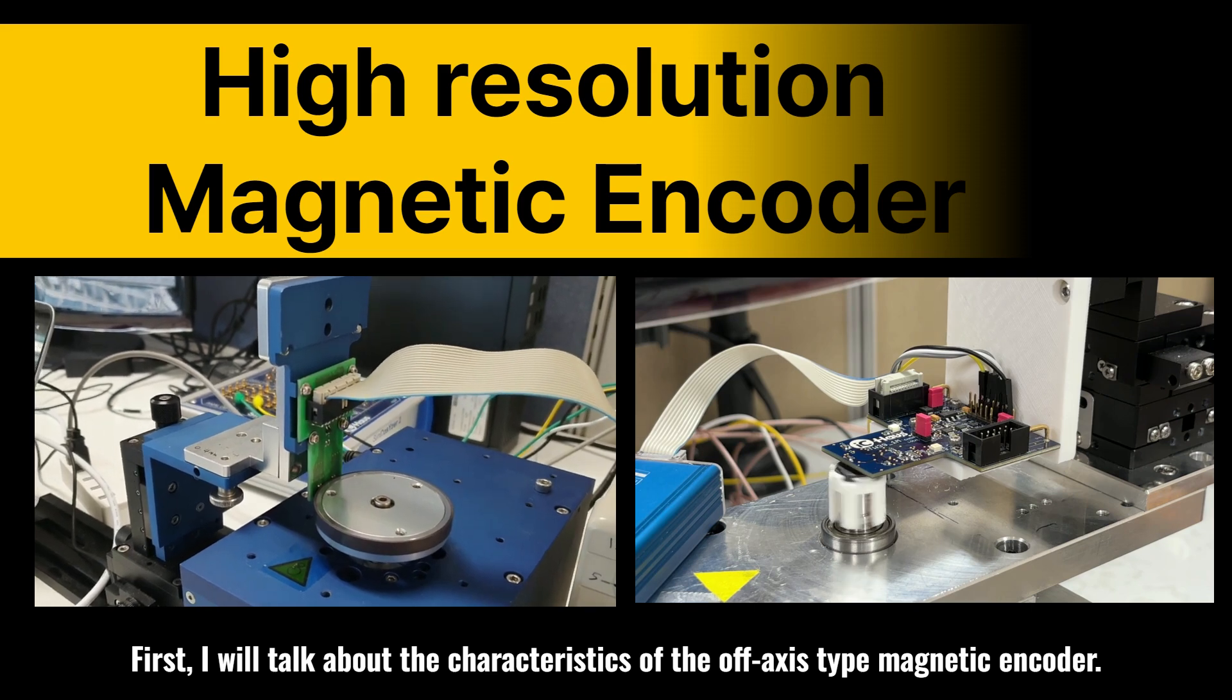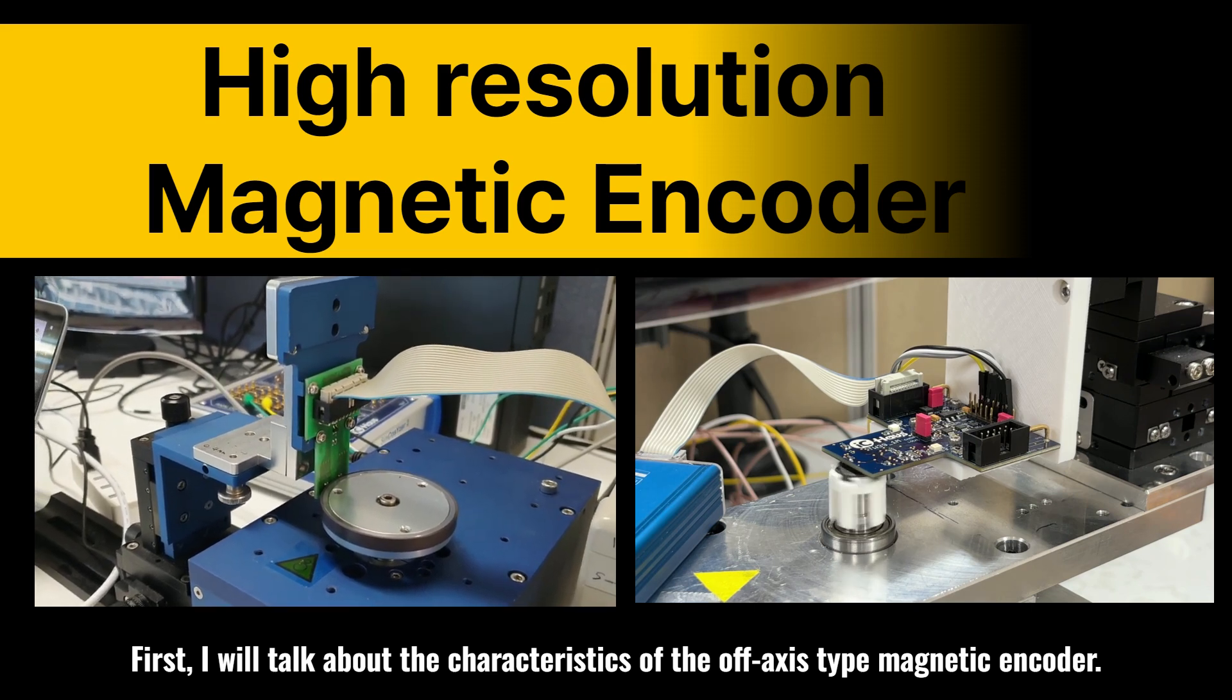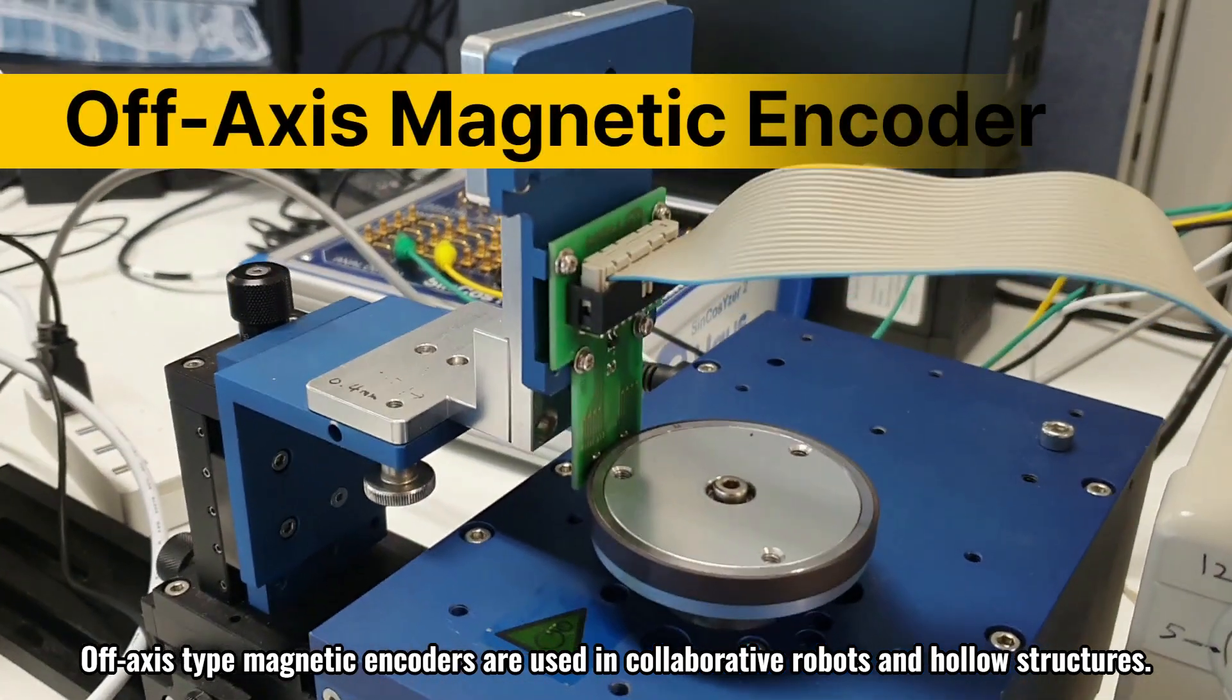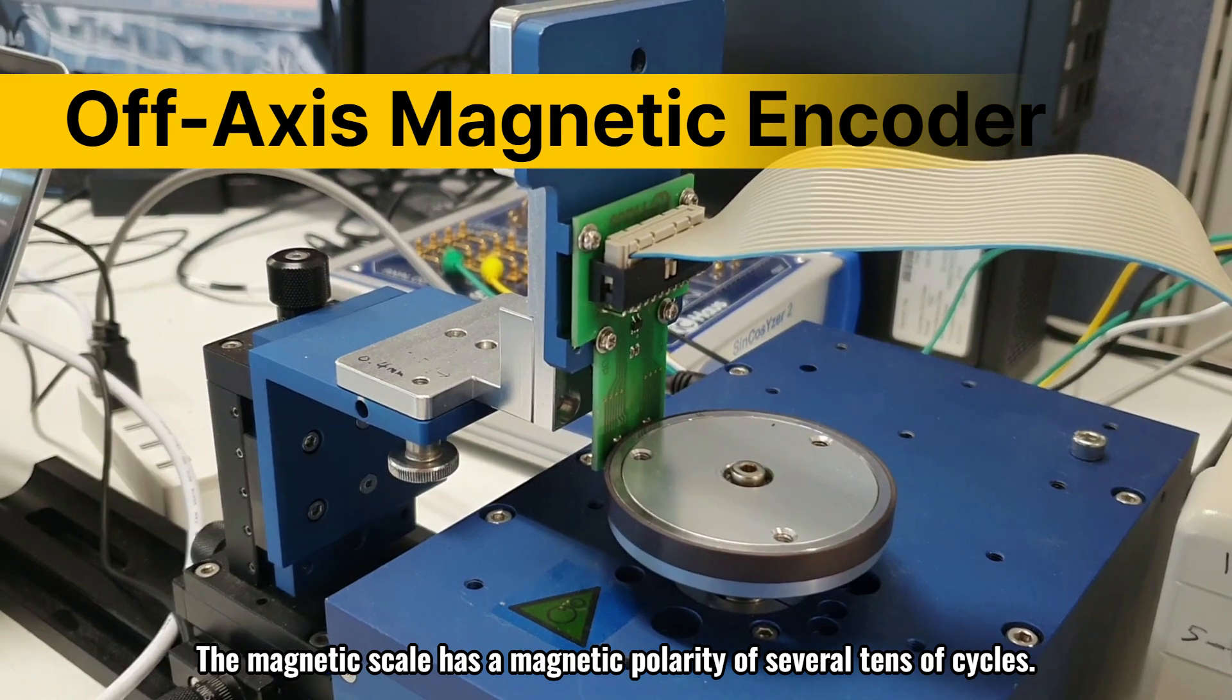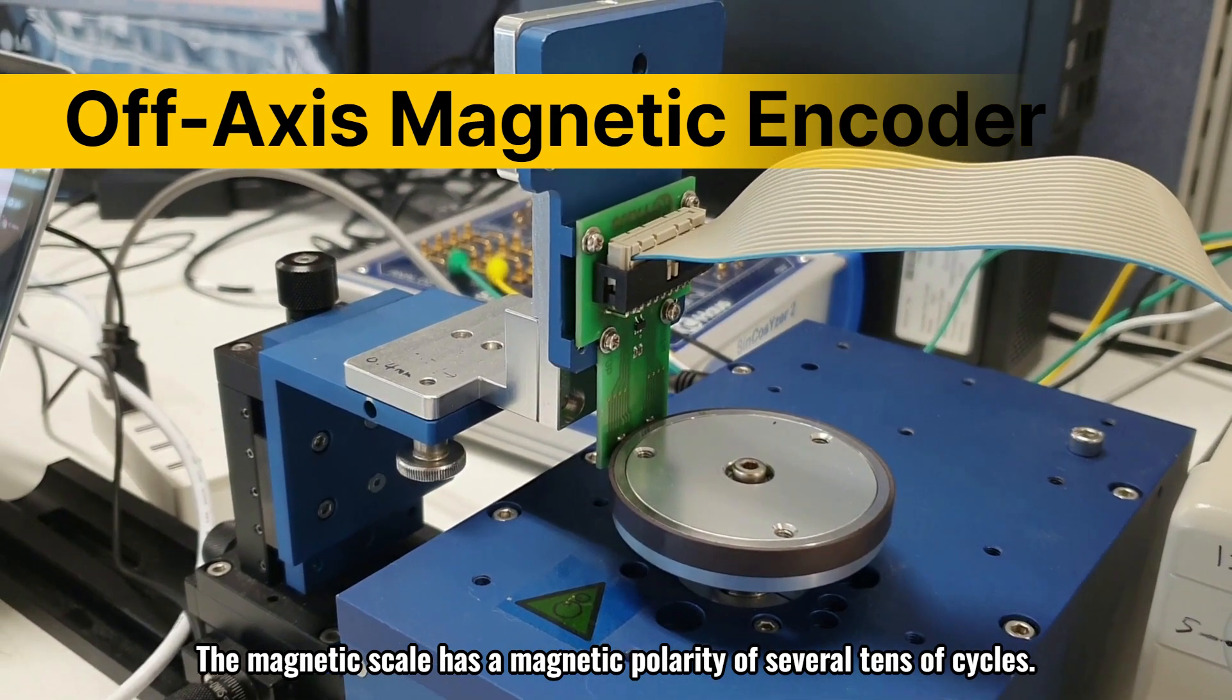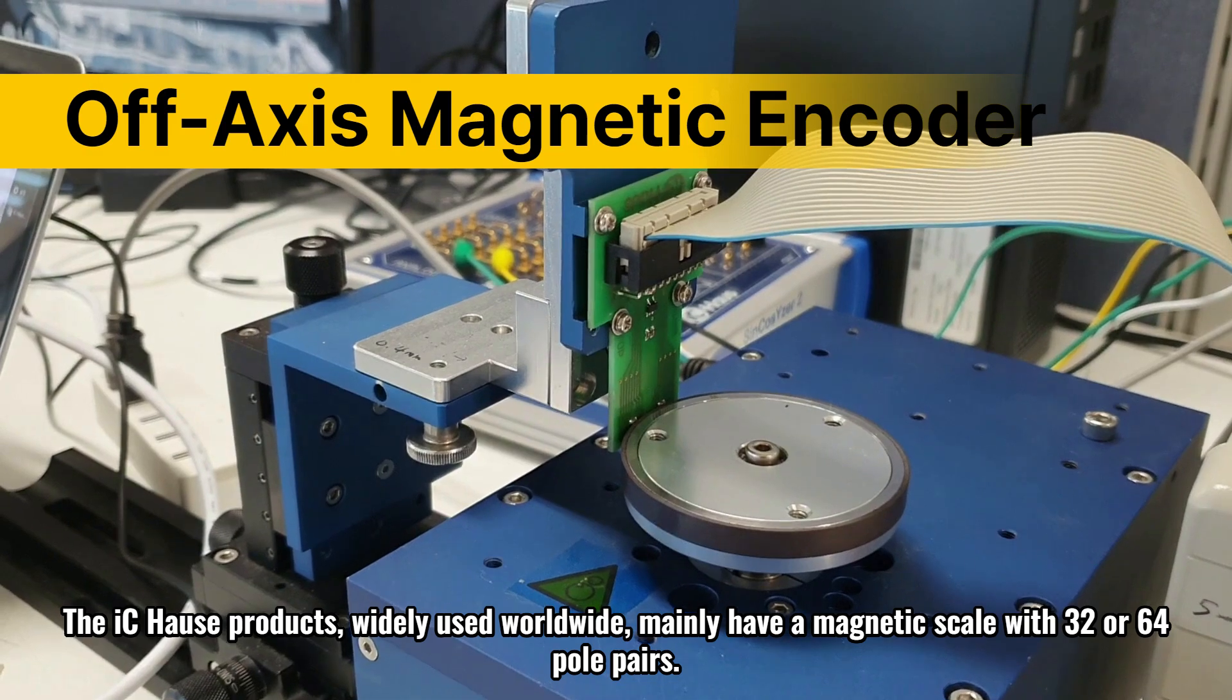First, I will talk about the characteristics of the off-axis type magnetic encoder. Off-axis type magnetic encoders are used in collaborative robots and hollow structures. The magnetic scale has a magnetic polarity of several tens of cycles.